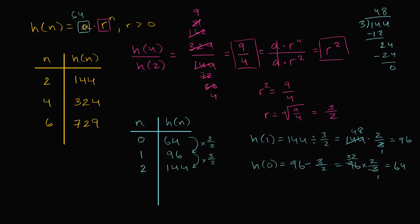And r is equal to 3 halves. So we can write h of n, we can say that h of n is equal to 64 times 3 halves to the nth power.